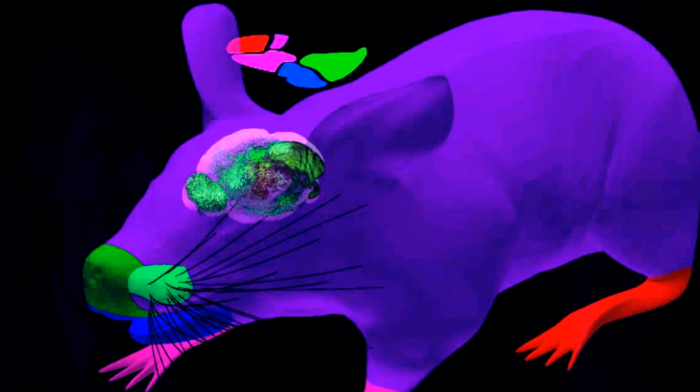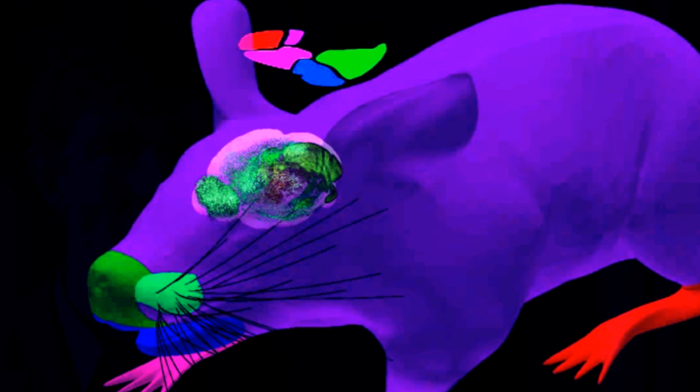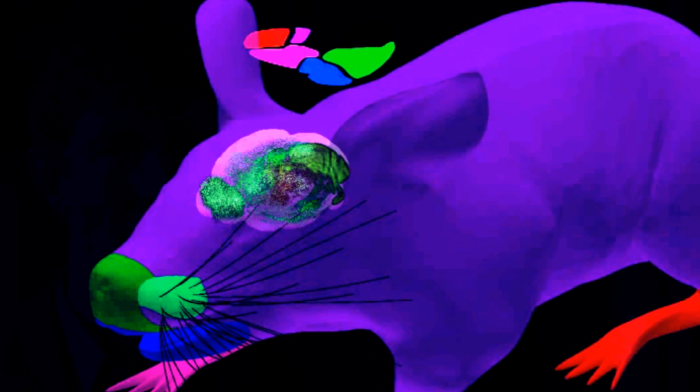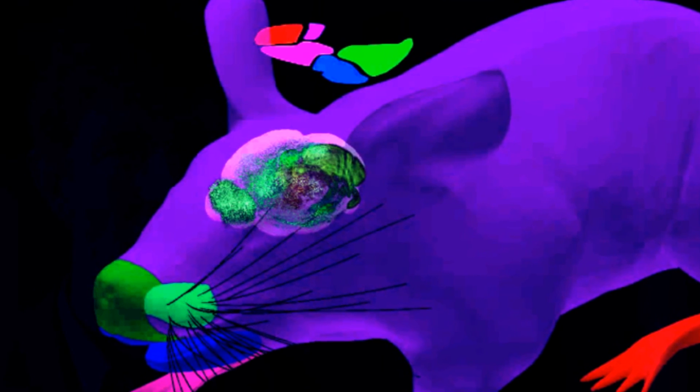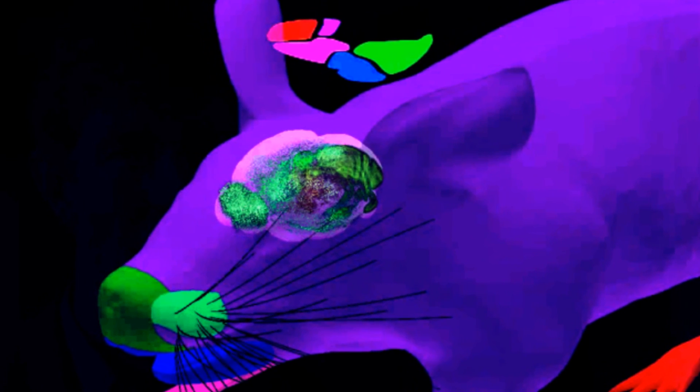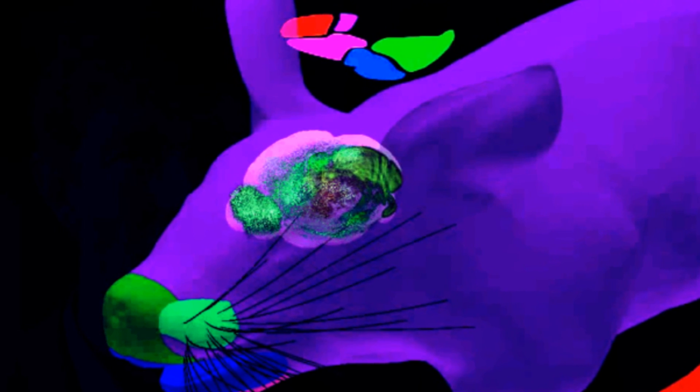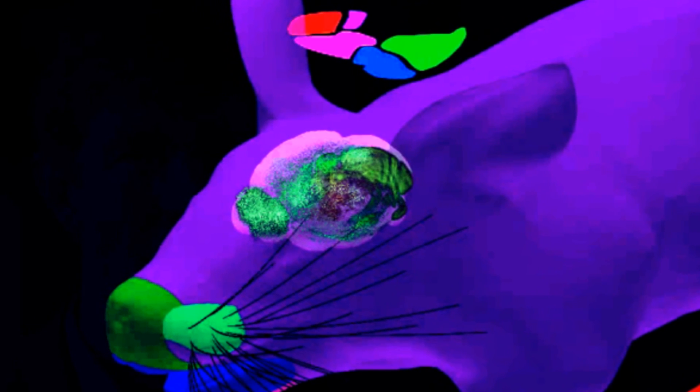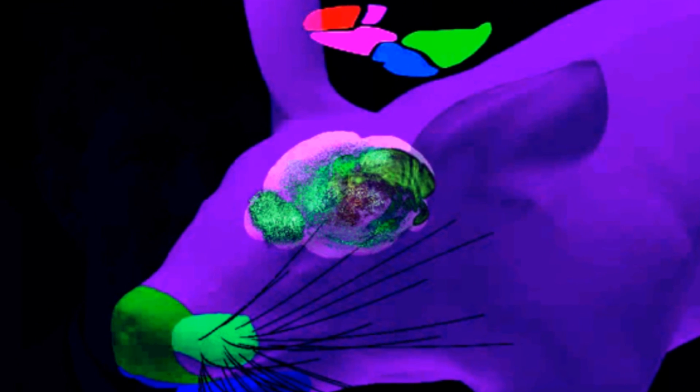Being able to image the whole brain at once at this level of detail is useful for determining which neurons are important for particular brain activities. By comparing snapshots taken of the brain at different times, scientists could learn which neurons are active after the delivery of a particular drug, or while the subject is engaging in a given behavior, or track the progress of a disease. The study is published in the journal Cell.